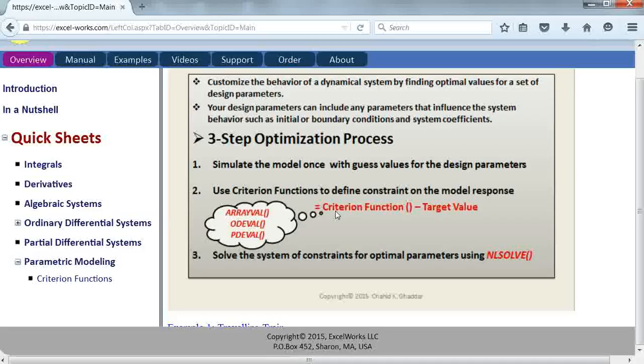It's very important that we understand the criterion functions. Criterion functions allow you to compute or extract a property from the differential system response. As we all know, differential system response is not a single number, it's an array of numbers, but a constraint has to evaluate to a single number. So we have to find a mapping between this array of numbers and the single quantity that we want to constrain. Criterion functions provide us the means to do this.